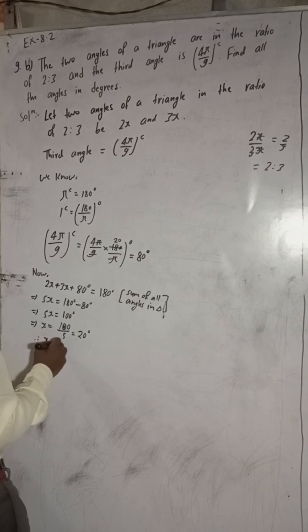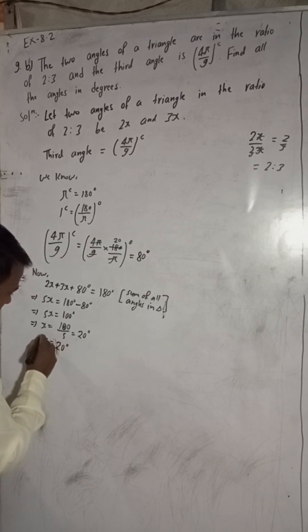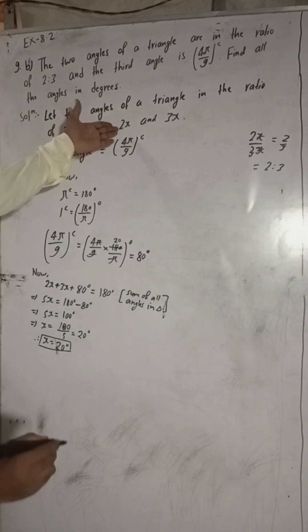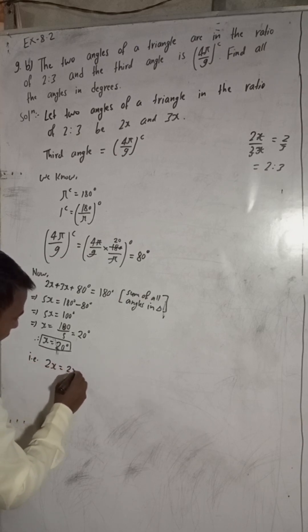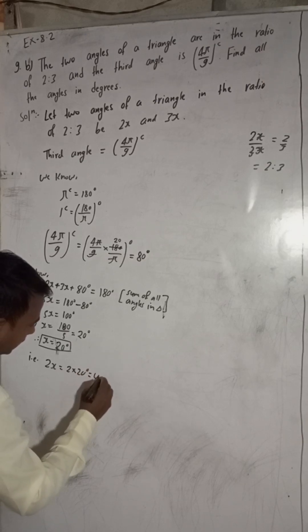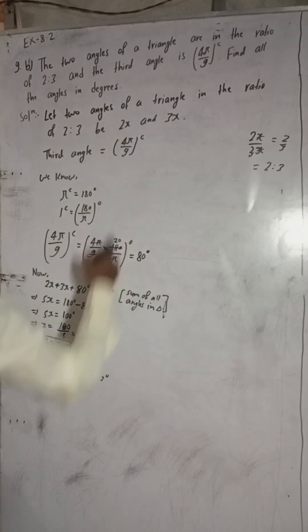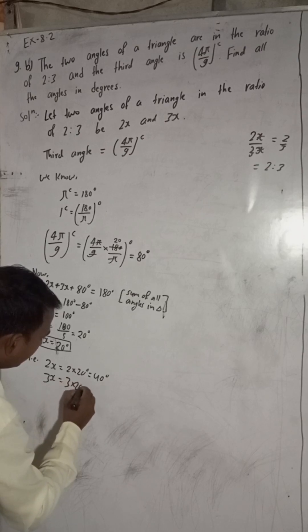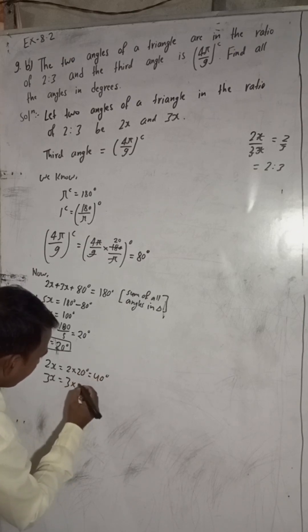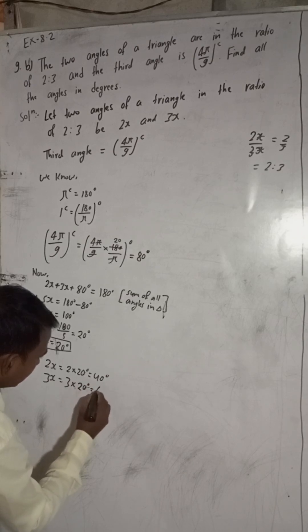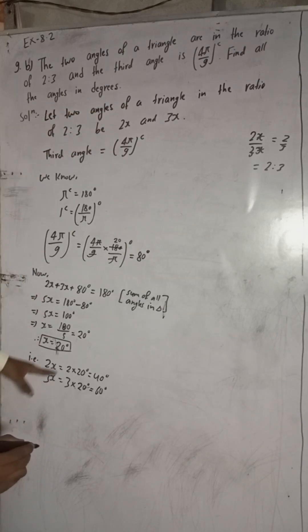Implies 5x = 100°, therefore x = 100/5 = 20°. So 2x = 2 × 20° = 40°, and 3x = 3 × 20° = 60°.